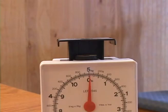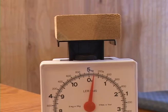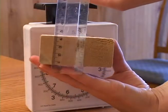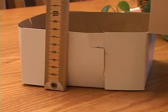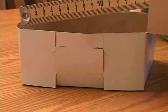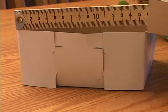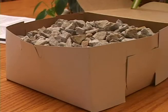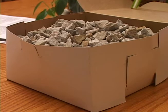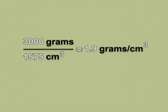To find the density of an object, you measure the mass of the object and the volume it takes up. For example, this box has a volume of 1,575 cubic centimeters. The same box, when filled with stones, has a mass of 3,000 grams. When we divide the mass of 3,000 grams by the volume of 1,575 cubic centimeters, we get a density of 1.9 grams per cubic centimeter.